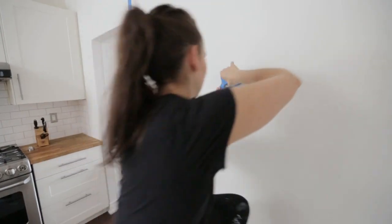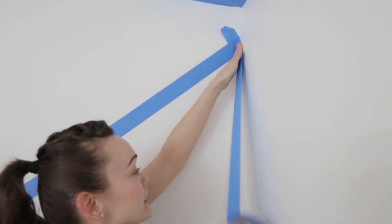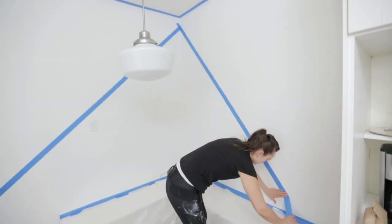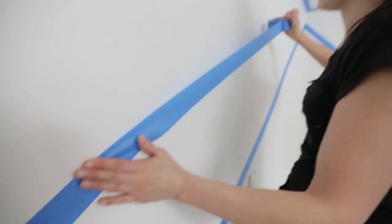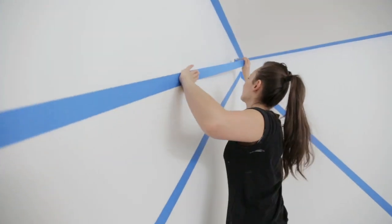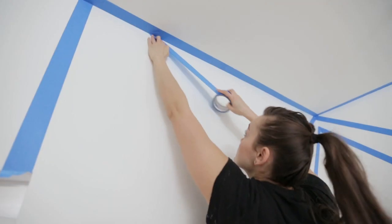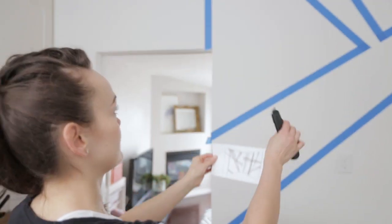Then came the fun part. With my Scotch Blue painter's tape, I taped out my first and biggest stripe. I was then able to quickly tape out all my other stripes while referring to my sketch to make sure my composition was just right.